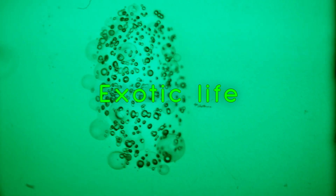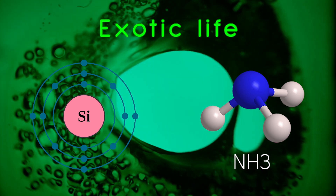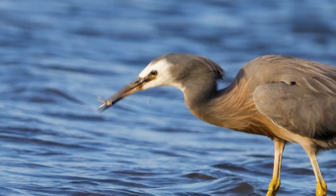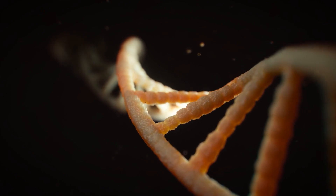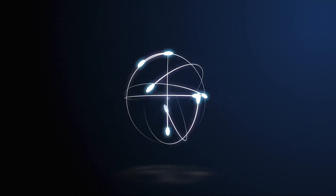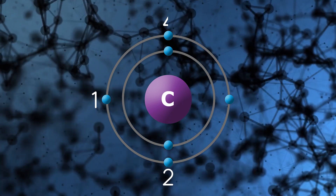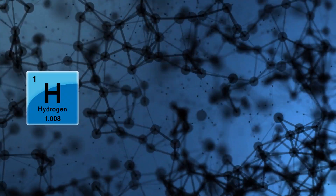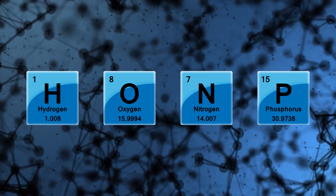Exotic life can be broadly split into two categories: exotic elements and exotic solvents. But let's focus on the elements first. Life on Earth is often described as carbon-based because carbon atoms form the chemical backbone for the molecules that create and sustain life. To understand exotic life, we first need to understand what makes carbon so well-suited for biochemistry. The element's unique ability to form four covalent bonds allows it to build with other elements — most commonly hydrogen, oxygen, nitrogen, and phosphorus — but most crucially of all, with itself.